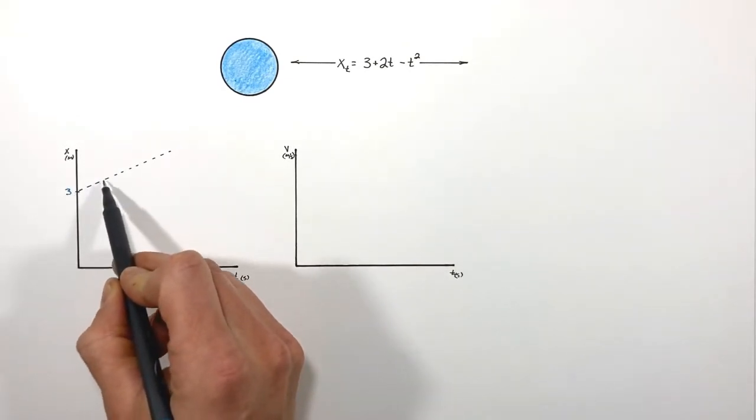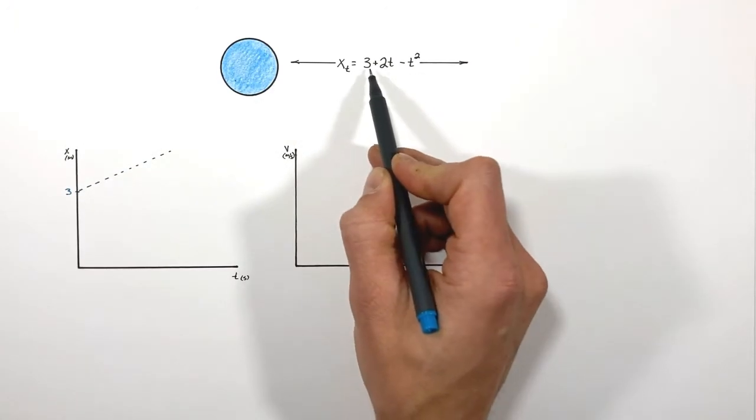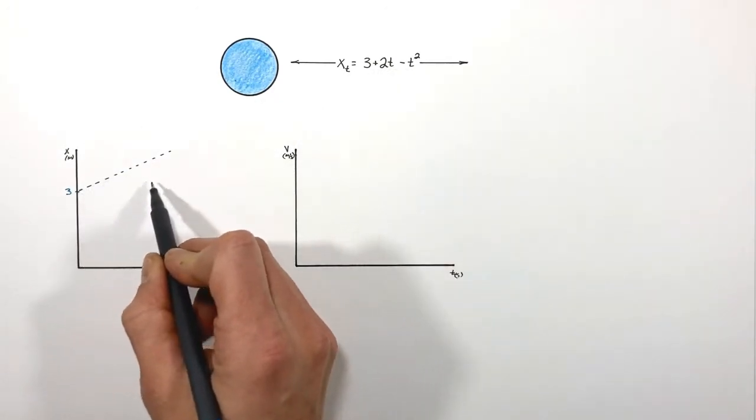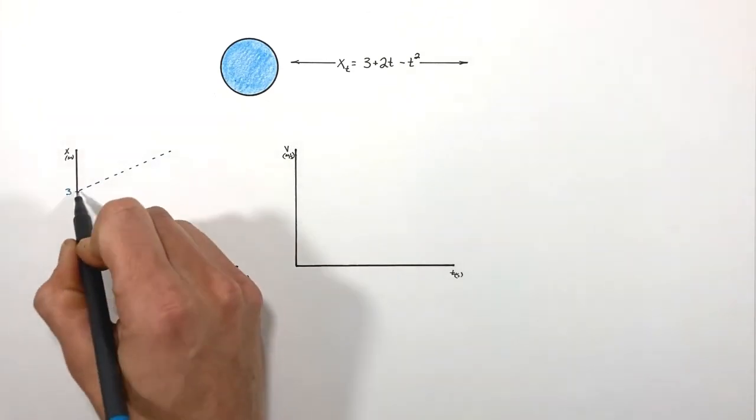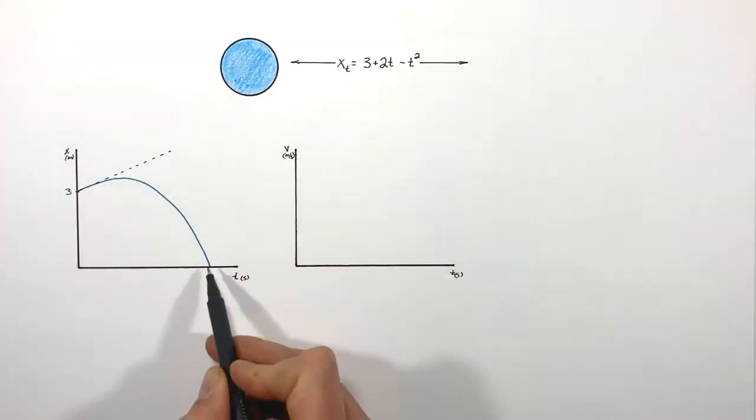So what's happening is this graph starts out moving along this line as though it's simply 3 plus 2t, but as time goes on this is going to arc downward like this.